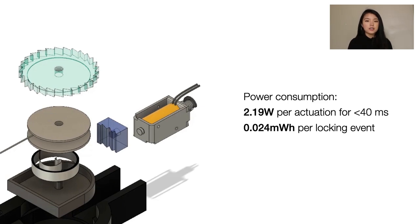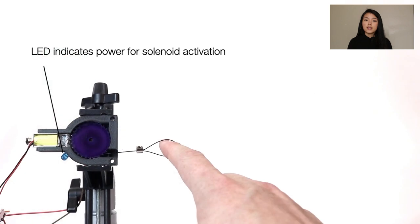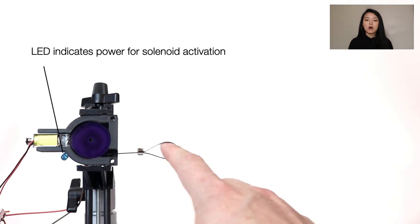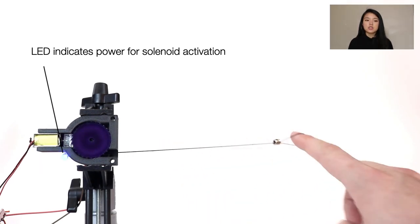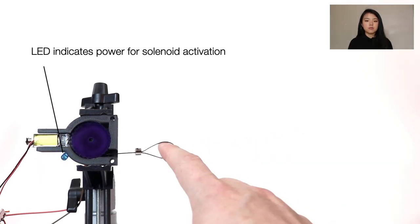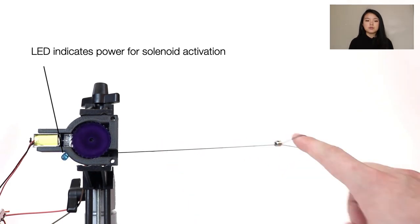Now let's look at how these components work in concert to minimize energy consumption while remaining fast and accurate. When the hand collides with a virtual object, our software triggers the solenoid to actuate, pushing the pawl into the ratchet, which locks the spool from further rotation, arresting the finger and ultimately the hand.